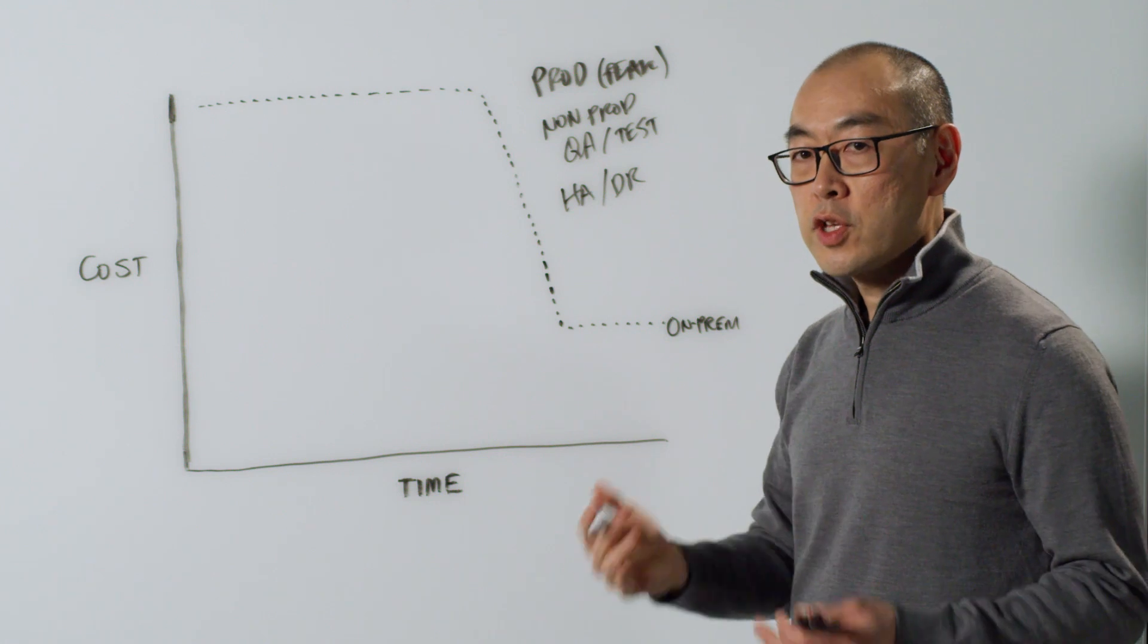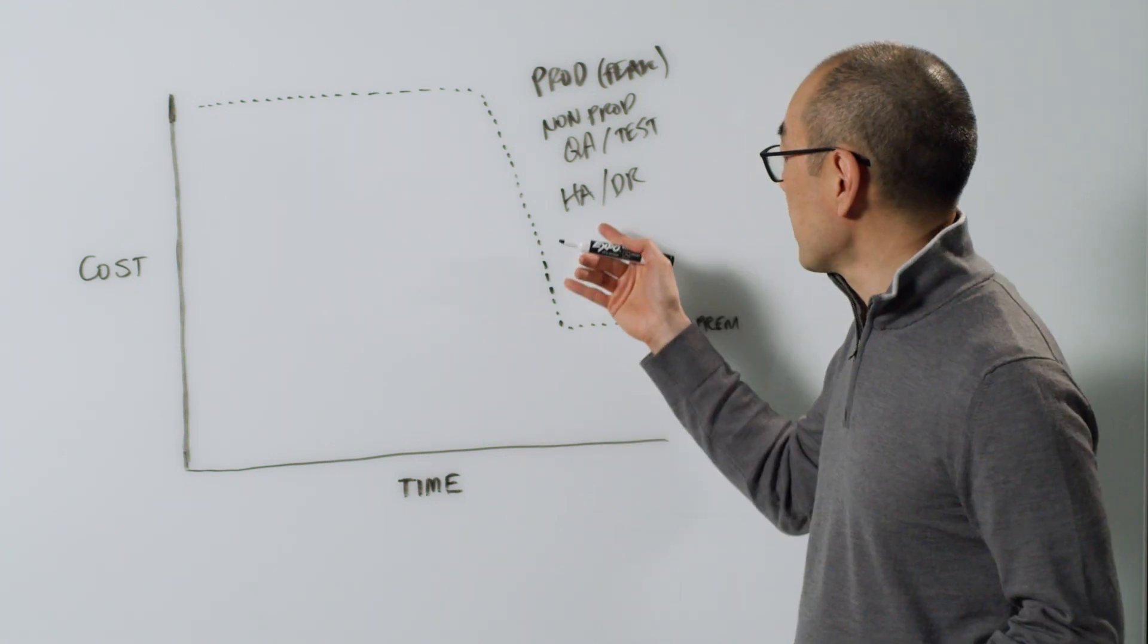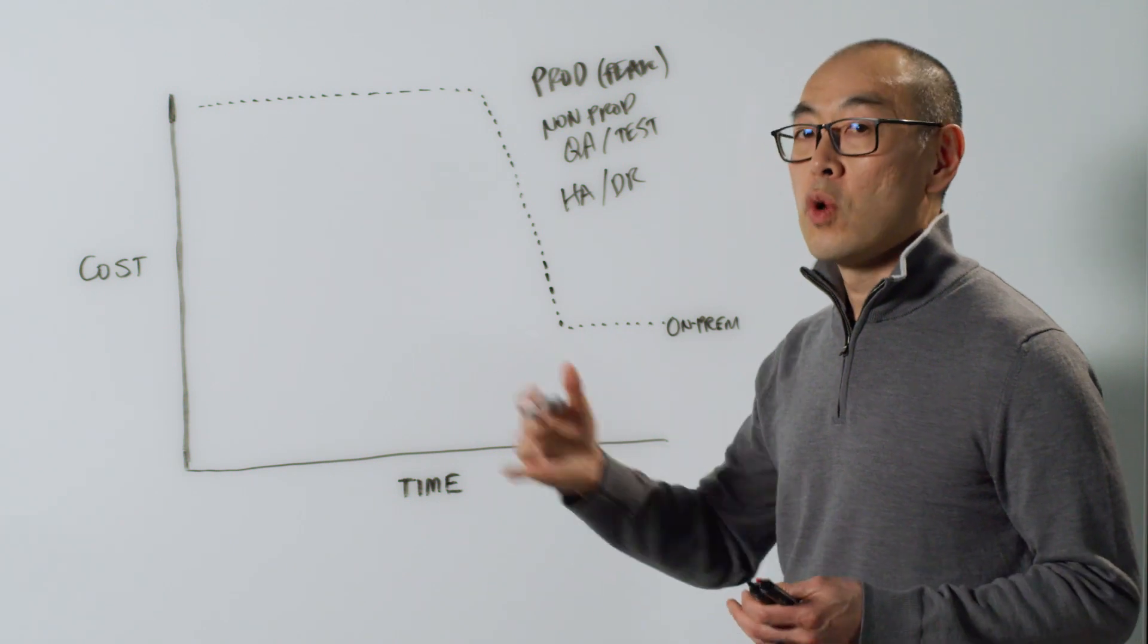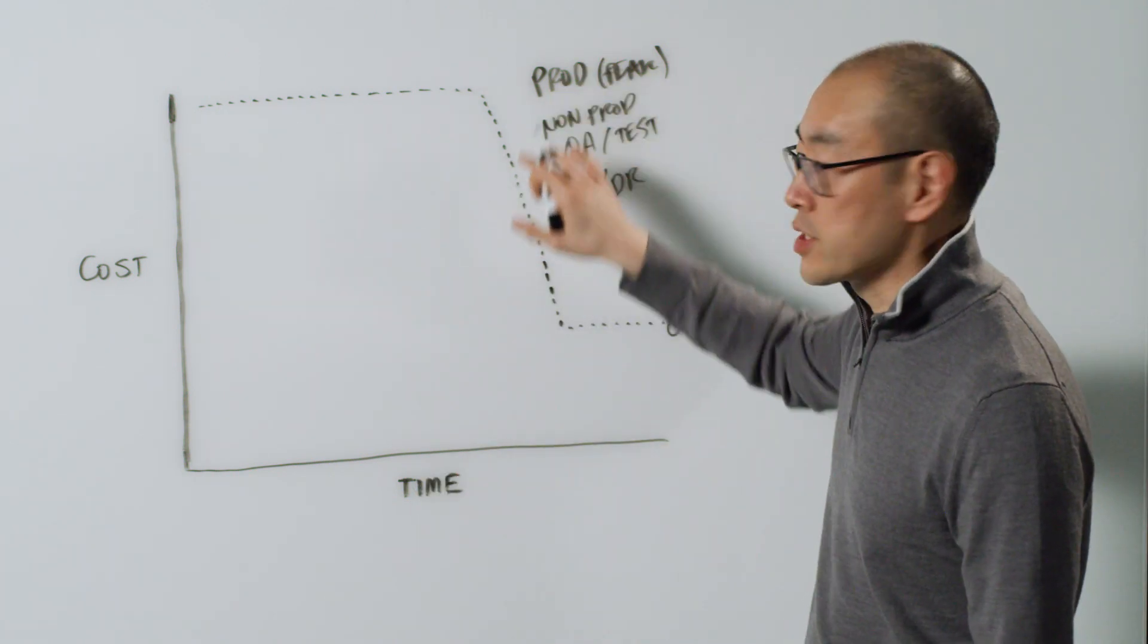For non-prod, typically you're going to have four to eight additional environments. And then for HA/DR, one more on top of that. So a lot of infrastructure to support all these types of use cases.